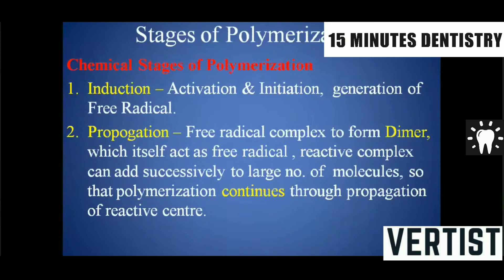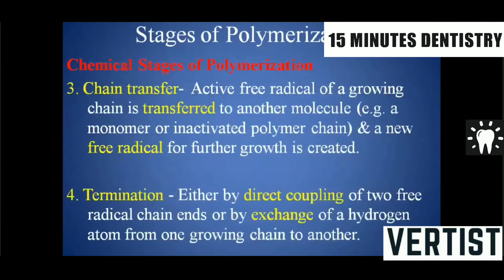During propagation, small monomers add by forming free radicals, continuing the polymerization process. Third is chain transfer, where the active free radical of a growing chain is transferred to another molecule — for example, a monomer or an inactivated polymer chain — and a new radical for further growth is created. Fourth is termination, done either by direct coupling of two radical chains or by exchange of a hydrogen atom from one growing chain to another.